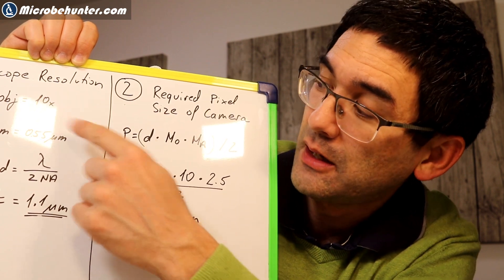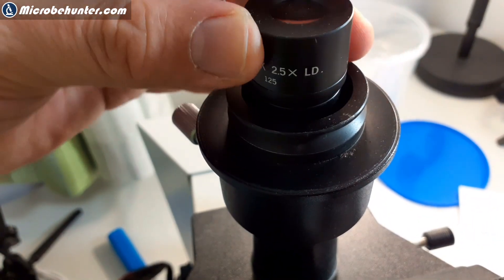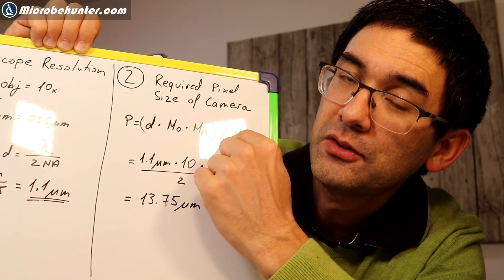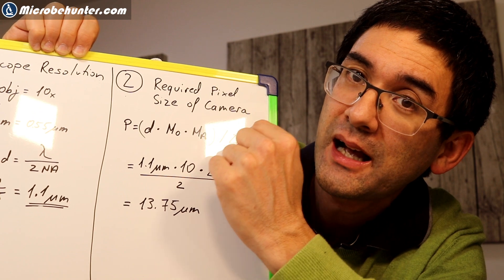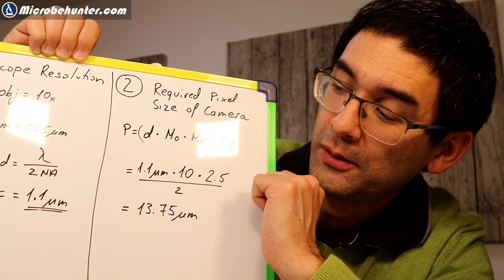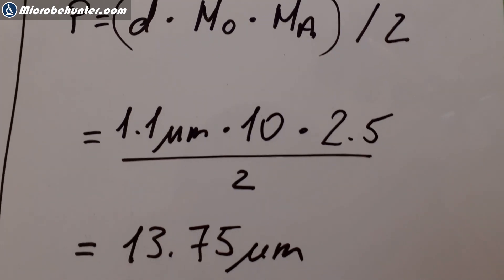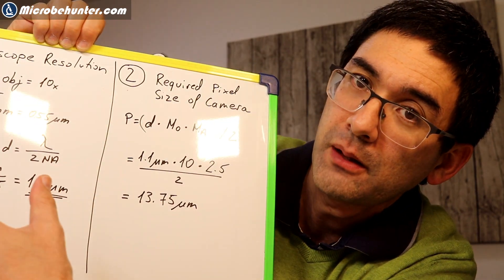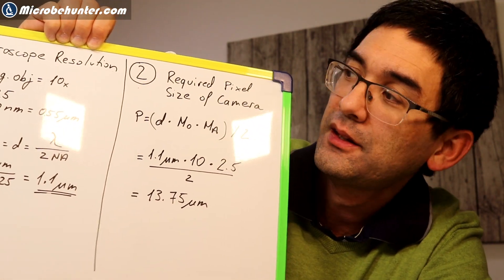And Ma, that is the magnification of the adapter. And you have to check your adapter what the value is. Usually it's printed on it. And this has to also go in here. And then we're going to divide everything by two. Why do we do this? Why do we divide everything by two? Because it's the Nyquist criterion. So the required pixel size has to be half the size than what the pixels are supplied by the microscope. And when you do all of this, then I get the required pixel size. It should be 13.75 micrometers. So that is basically what I need. And this is basically what I'm given, supplied by the microscope over here. And now I need to kind of combine both of them. And this is going to be our step three.